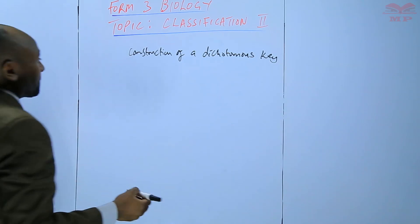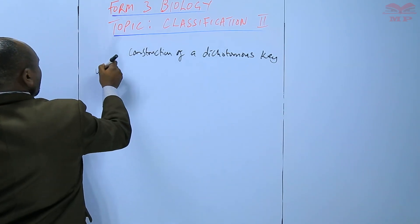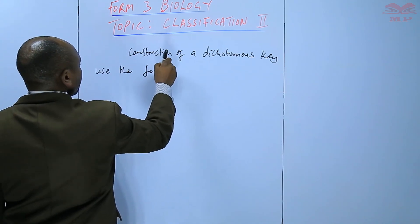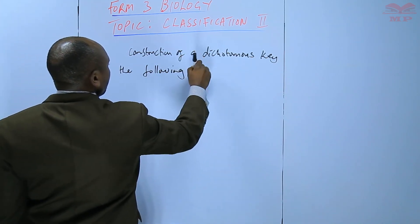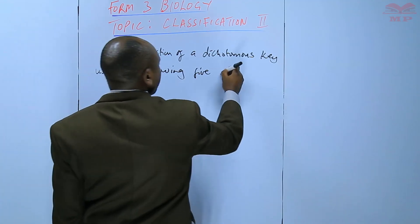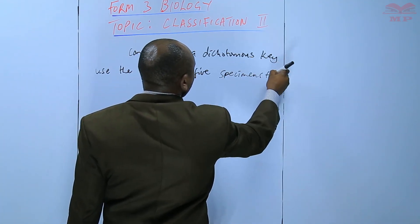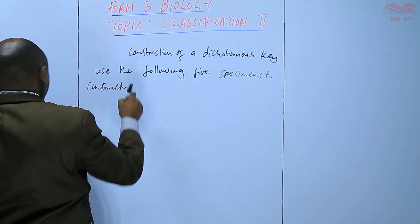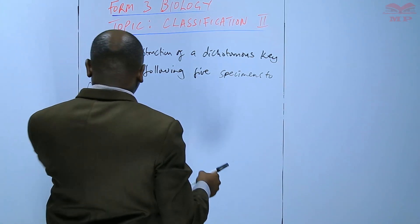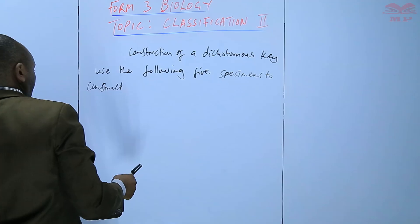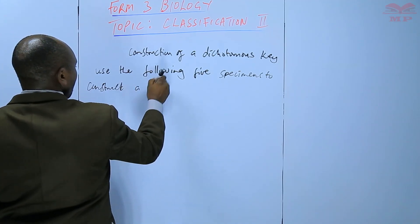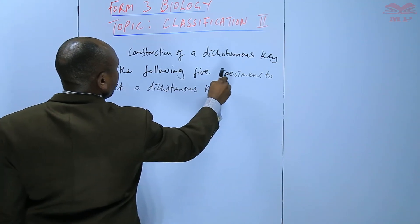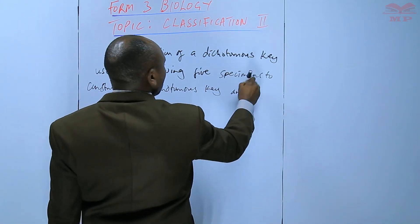We are given five specimens. We are told, use the following five specimens to construct a dichotomous key and use it for identification.